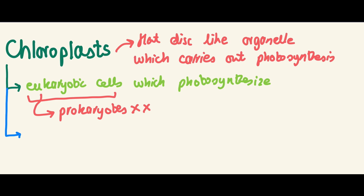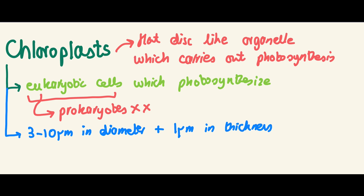Chloroplasts are three to ten micrometers in diameter and one micrometer in thickness. Also worth noting: even in plant cells, not all cells have chloroplasts — for example, root cells don't photosynthesize. You're only going to have chloroplasts in the plant cells that photosynthesize.